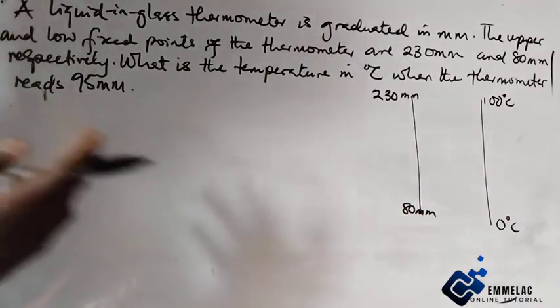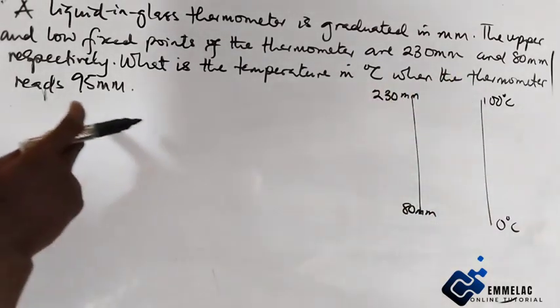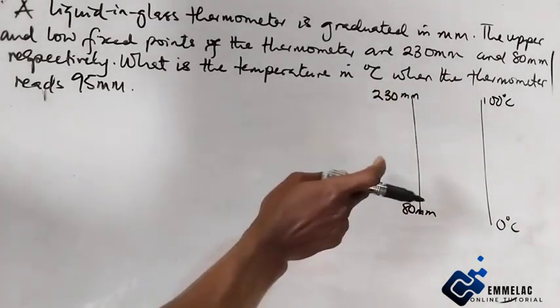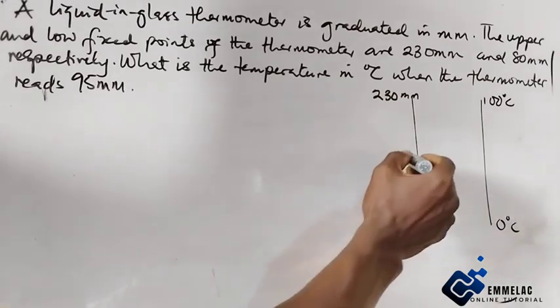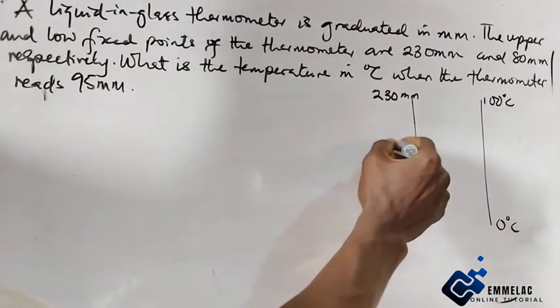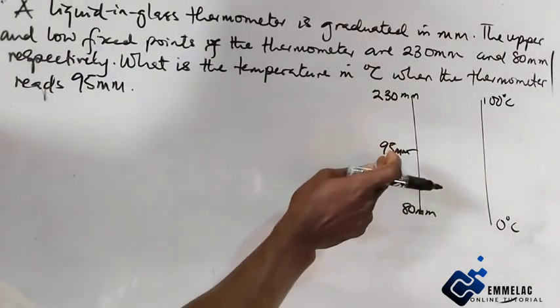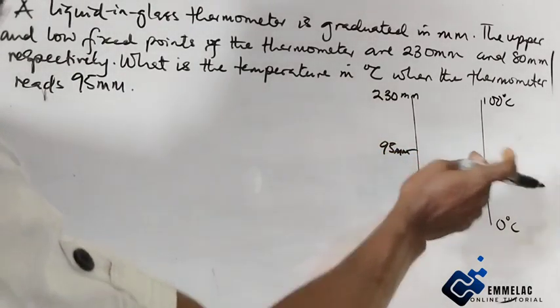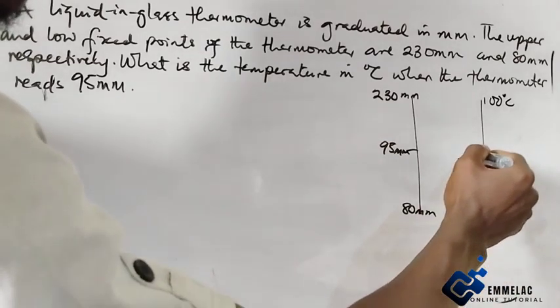So we are asked: what will be the temperature reading when the thermometer reads 95 millimeters? The question is, what is the equivalent of this on the Celsius scale? Let's say this unknown value is x.